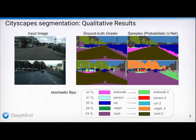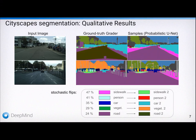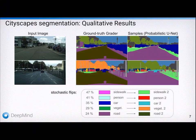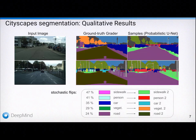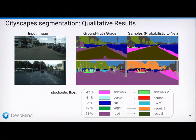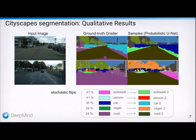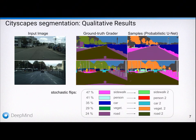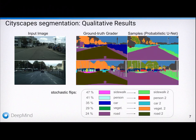In order to measure how well the models are calibrated, we introduce artificial stochasticity to the cityscapes street scene segmentation task. We independently flip 5 classes with fixed probabilities to newly introduced alternative classes, thus resulting in 32 modes of largely varying likelihoods. The rightmost column here shows samples from our model, which are consistent and thus individually plausible, as opposed to, for example, approaches that model a pixelized uncertainty via Monte Carlo dropout.